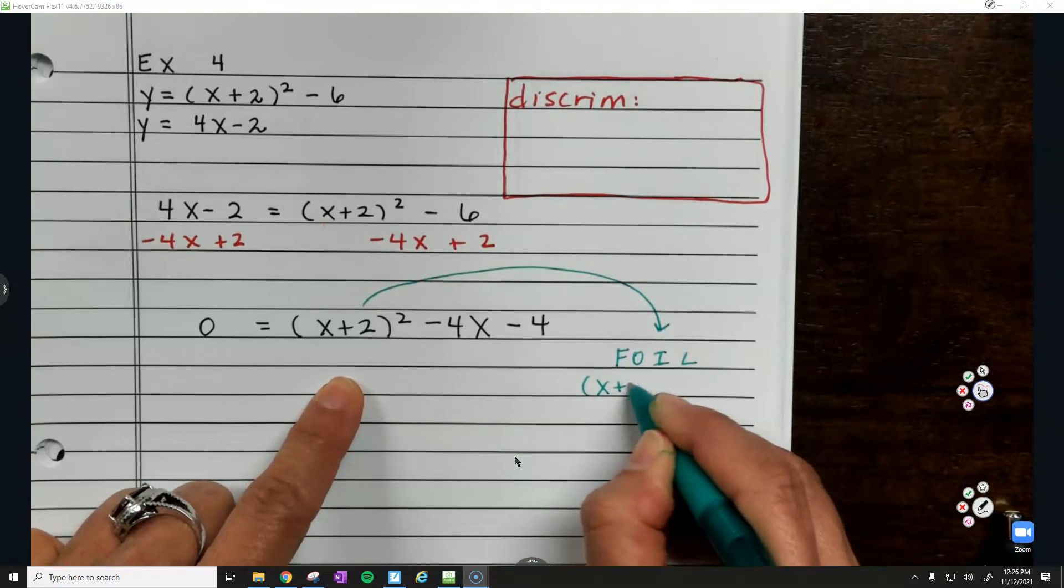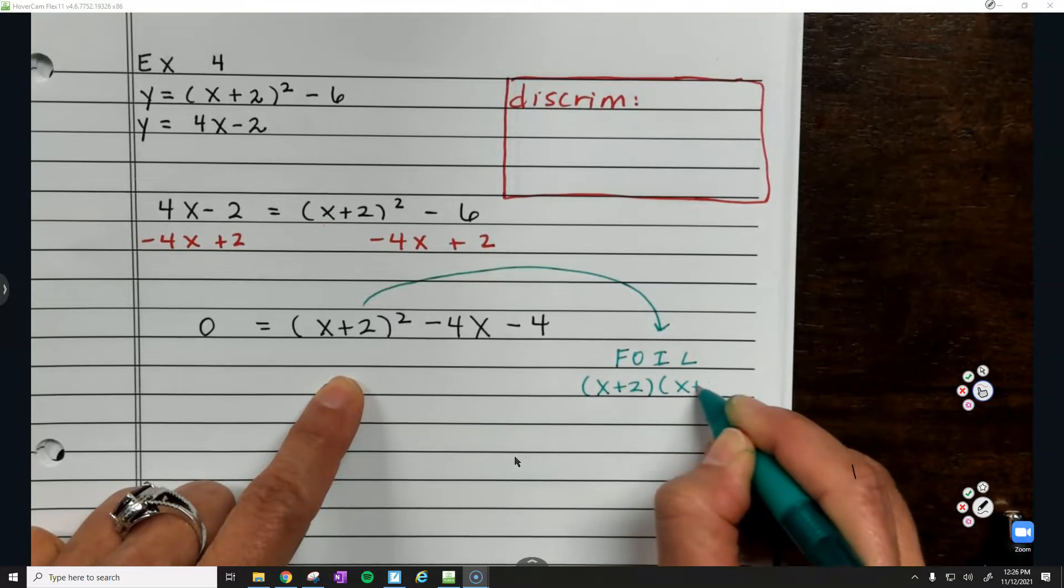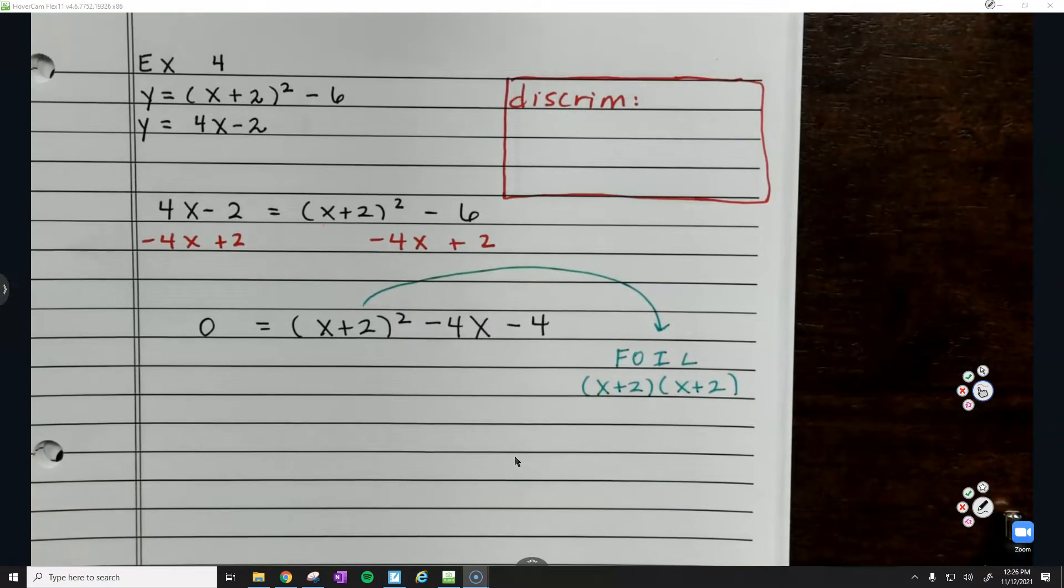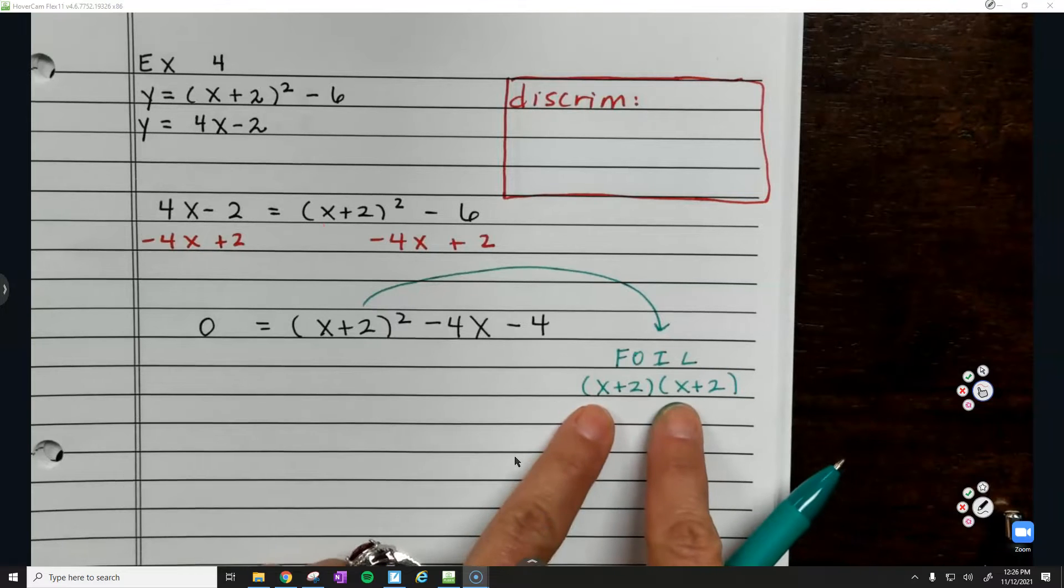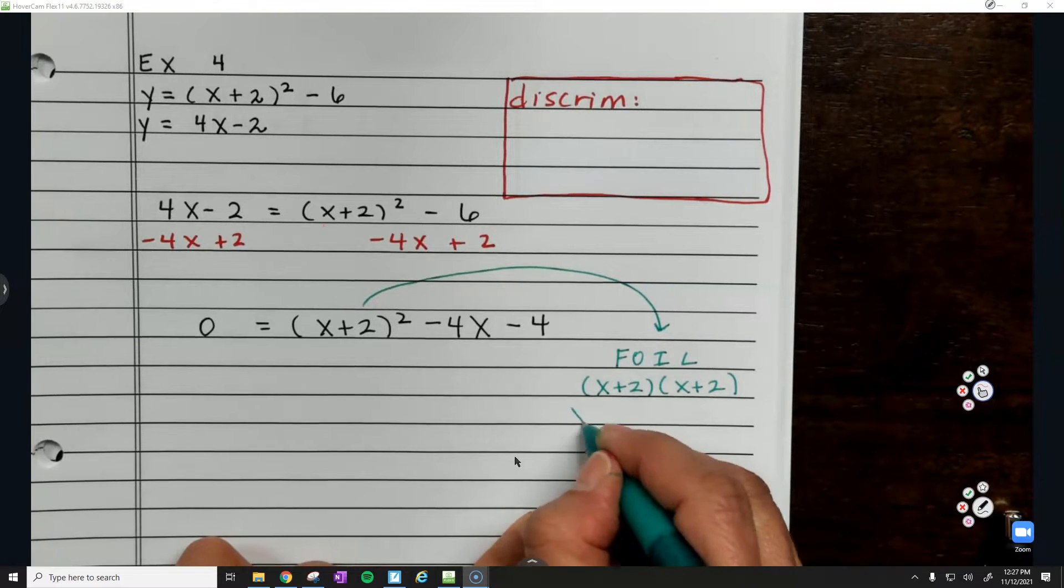We're going to go ahead and multiply this out. Remember, first, outer, inner, last. So your first two terms, x times x, that's x².